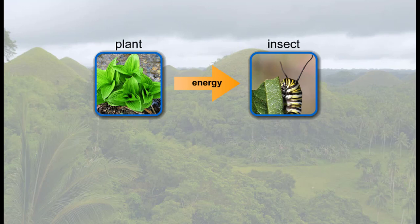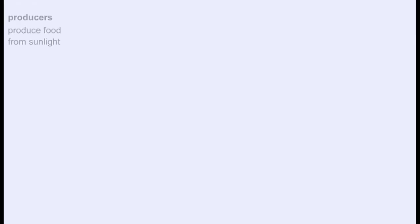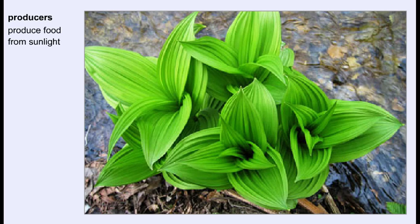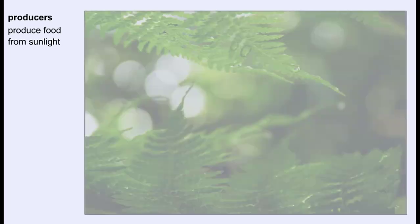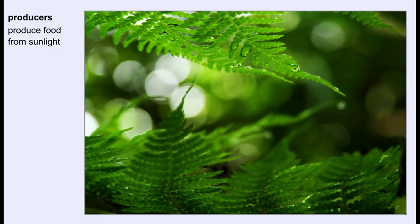We can classify the members of a community according to how they obtain food. Producers produce their own food. Most producers use sunlight to perform photosynthesis in order to make sugar. The producer then breaks down the sugar, much in the same way as animals, to get energy. Plants, algae, and some bacteria are examples of producers.